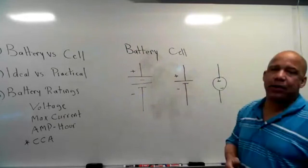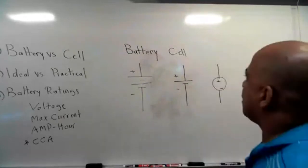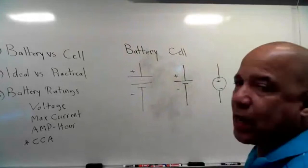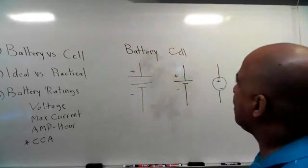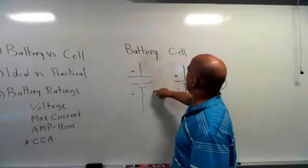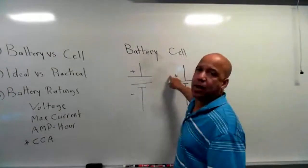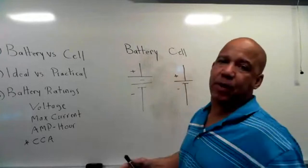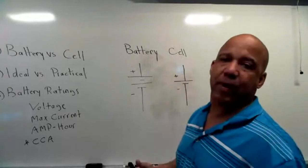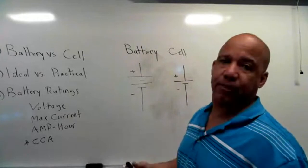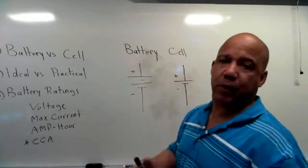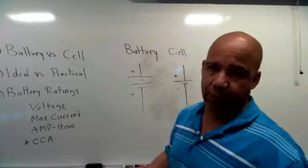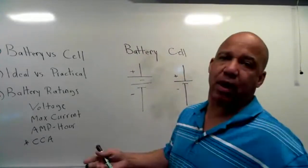The word battery means group. You can have a battery of men if you go to war — that's a group of men. When you see battery in electronics, they mean a battery of cells. A cell is the smallest unit. If you take more than one cell and put them together, you have a group — a battery of cells. They just dropped the word and called it a battery.